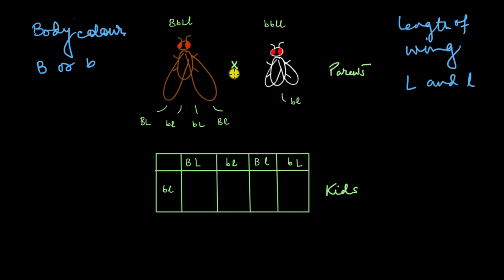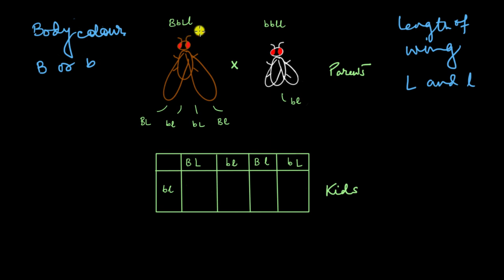To perform this cross, Morgan had taken a fruit fly which showed all the alleles of both of these genes. So it had a capital B, a small b, a capital L, and a small l — meaning that this fruit fly was a heterozygote. And since it had the dominant alleles, those are the ones that got expressed. So on the outside, this fruit fly had a brown body with very long wings.